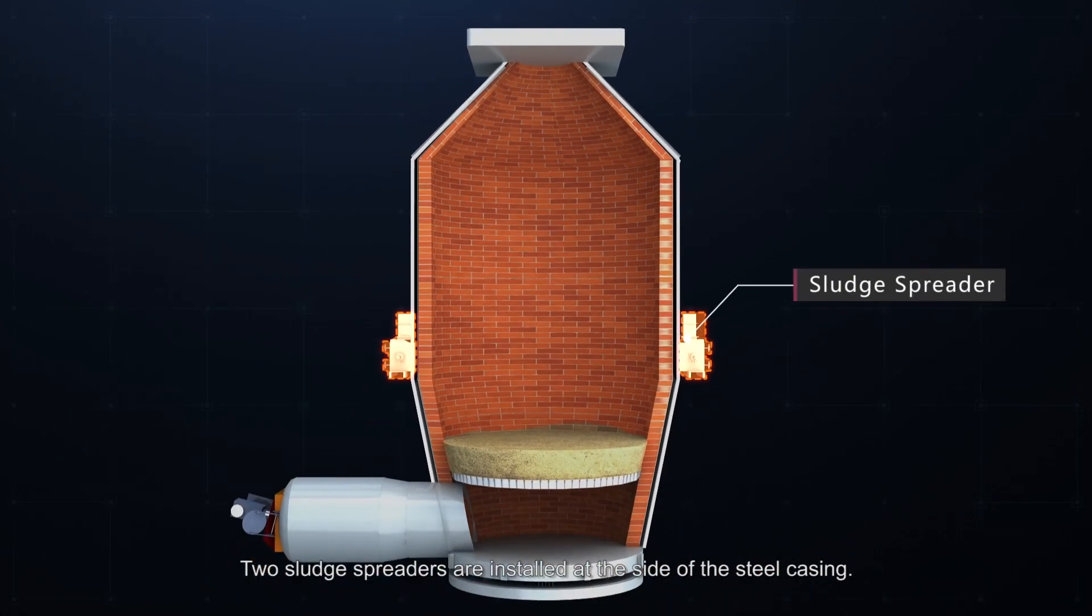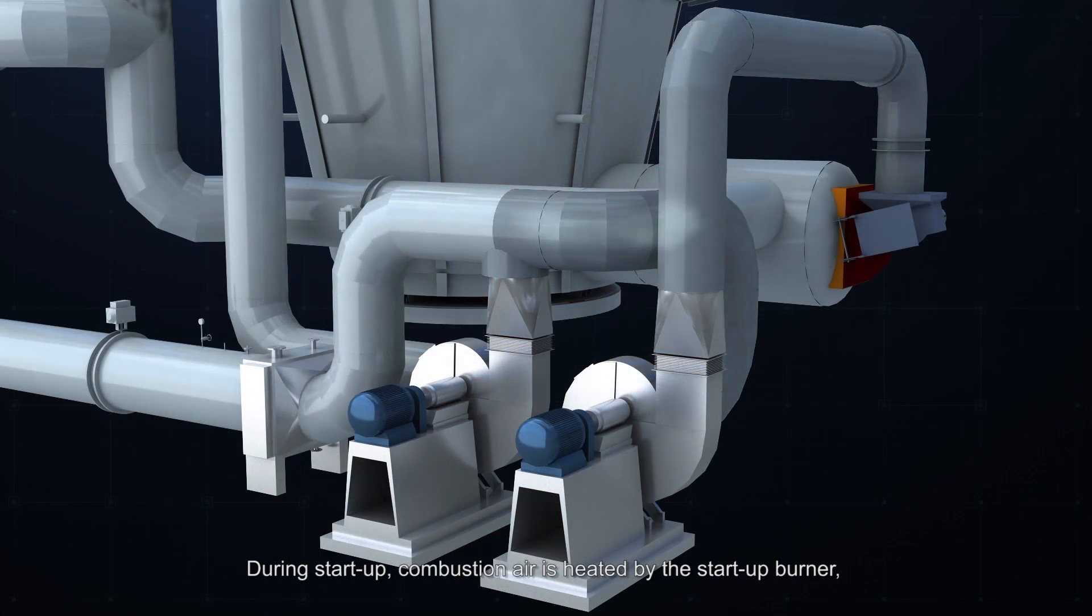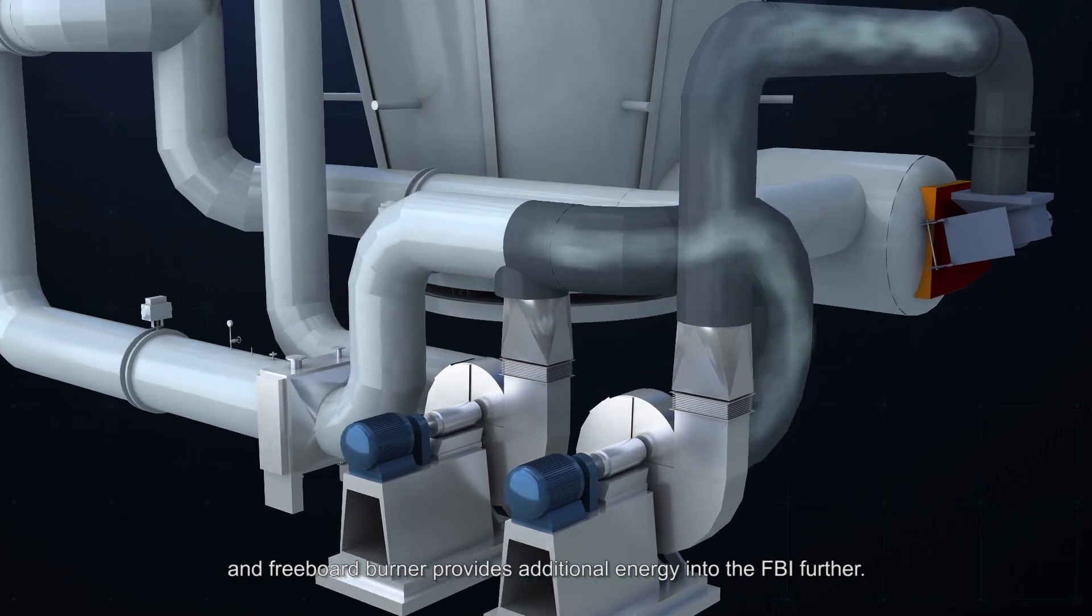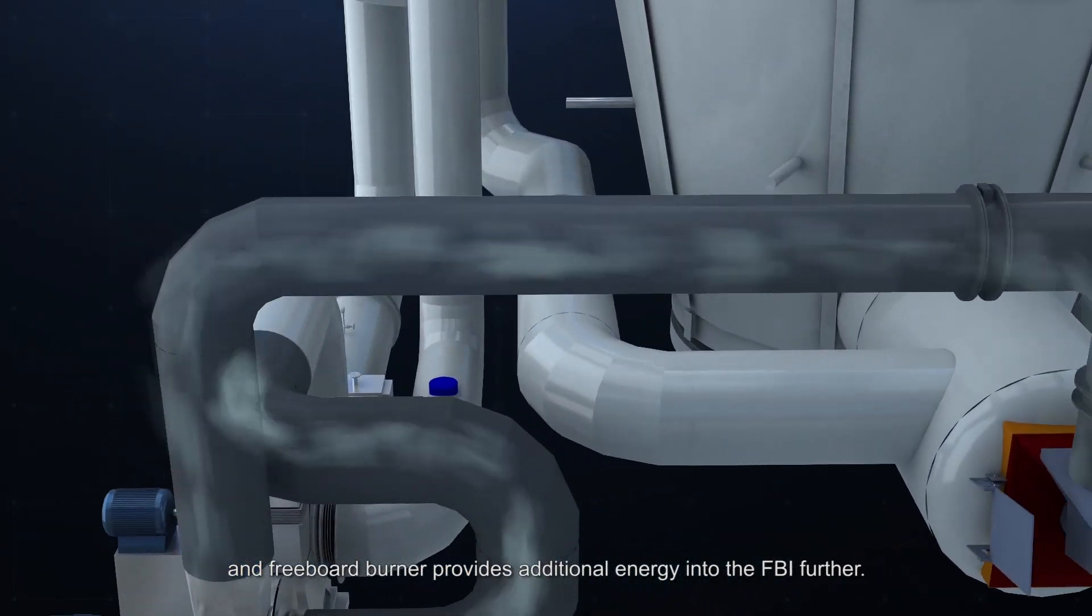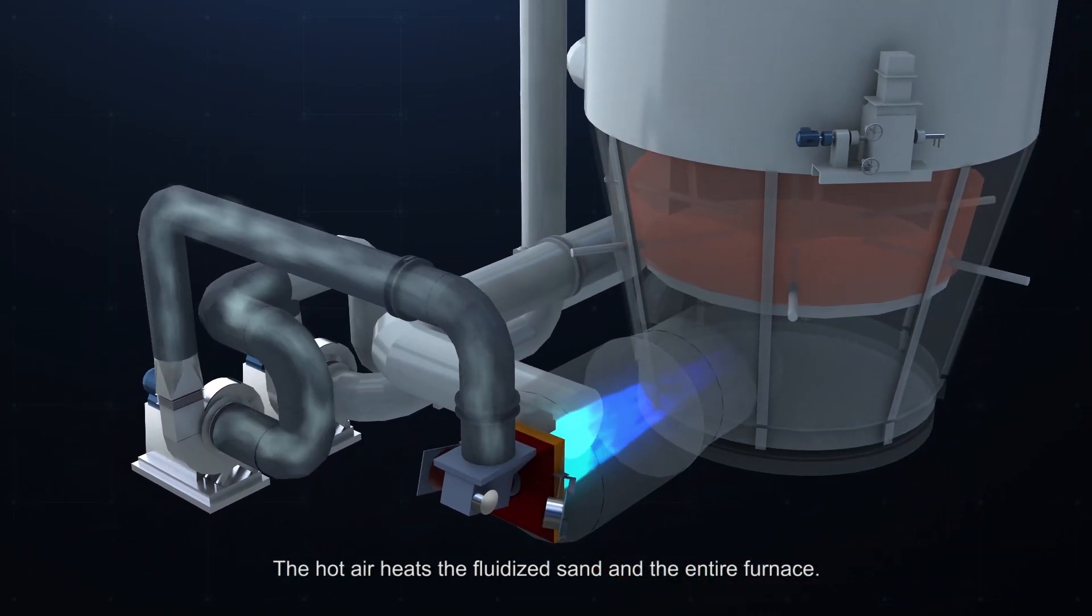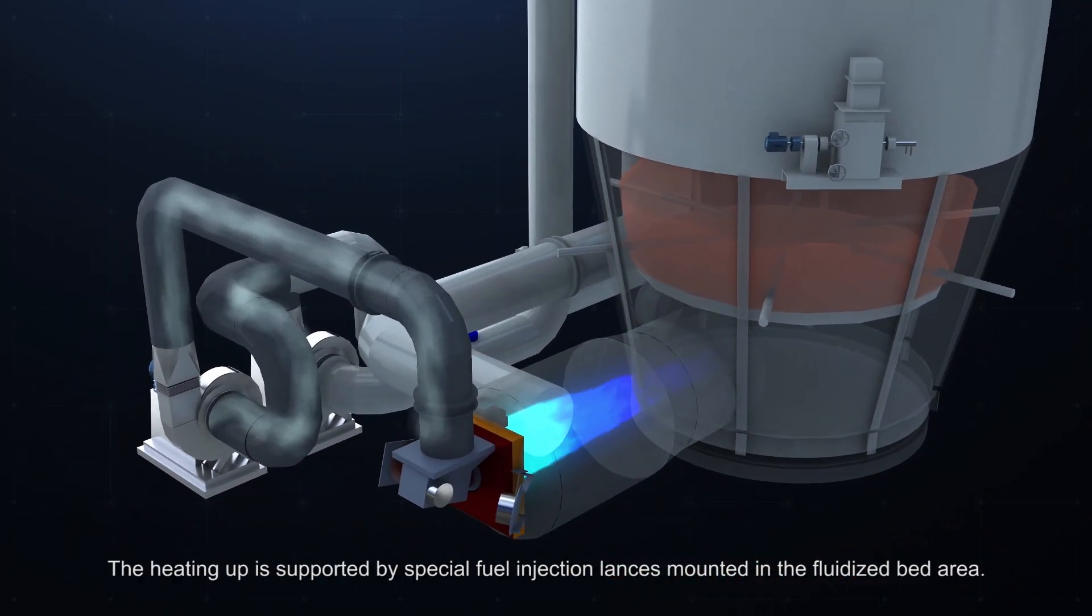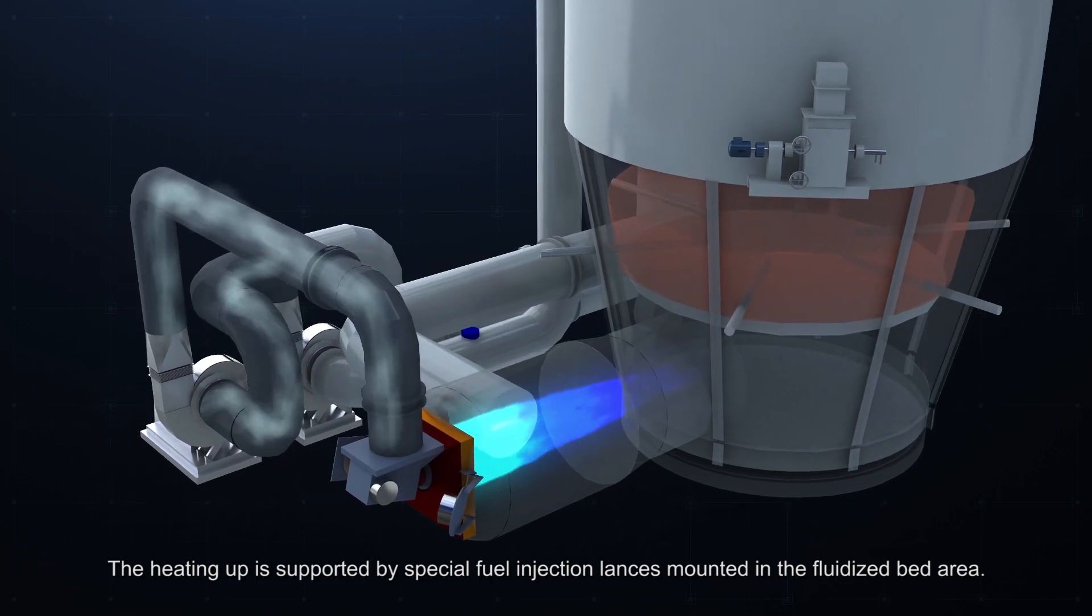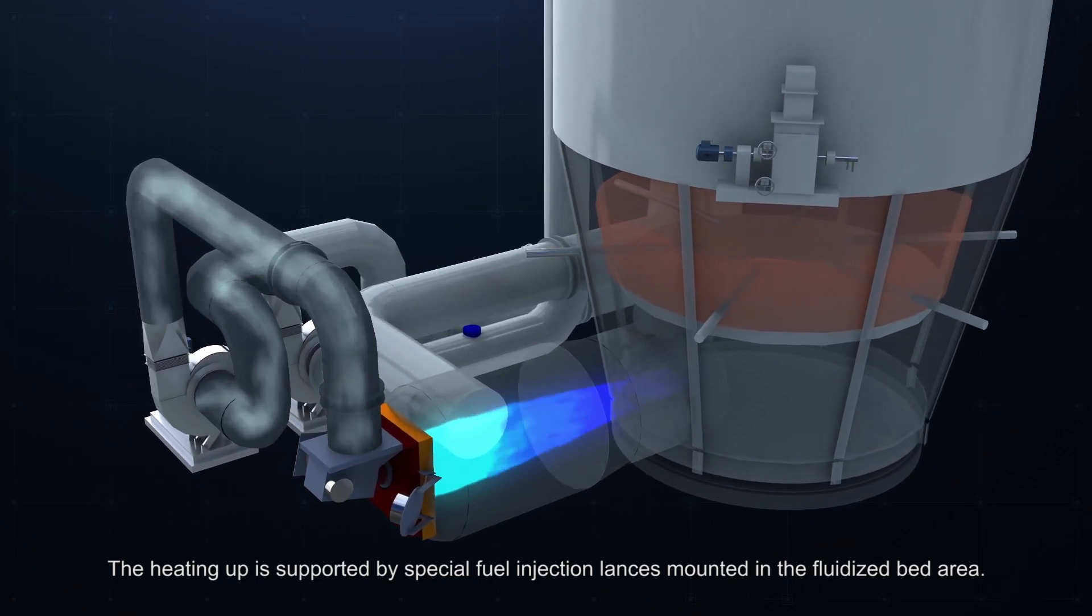Two sludge spreaders are installed at the side of the steel casing. During startup, combustion air is heated by the startup burner and freeboard burner provides additional energy into the FBI further. The hot air heats the fluidized sand and the entire furnace. The heating up is supported by special fuel injection lances mounted in the fluidized bed area.